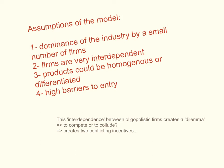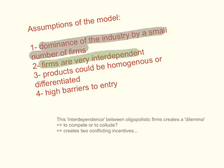Like all the other market structures I have discussed, I'm going to start by talking about the assumptions of the model. Firstly, we assume there is a dominance of the industry by a small number of firms. These firms are very interdependent — not completely independent in terms of their pricing and output decisions. Their products could either be homogenous or differentiated, and there are high barriers to entry into the market.